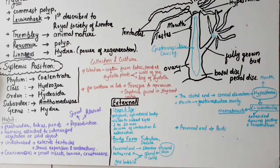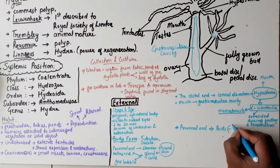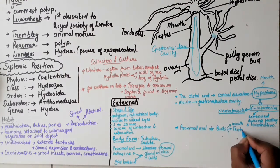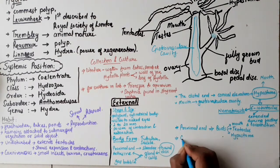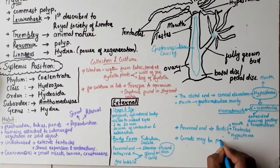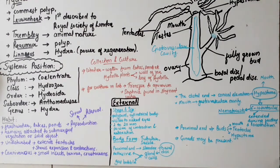At the proximal end, we can see buds. Mature buds have their own mouth, tentacles, and hypostome. Once fully matured, they detach from the parent body.